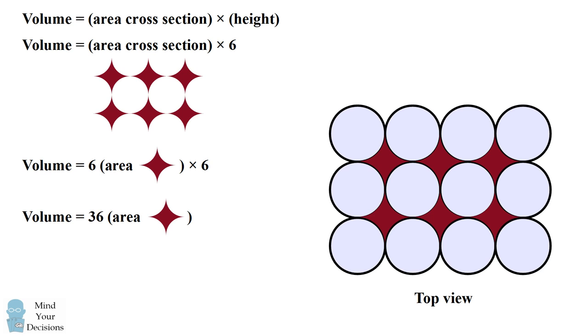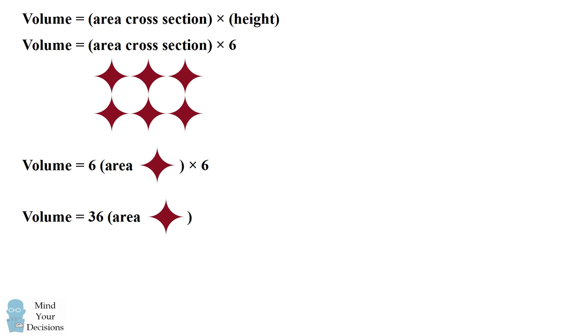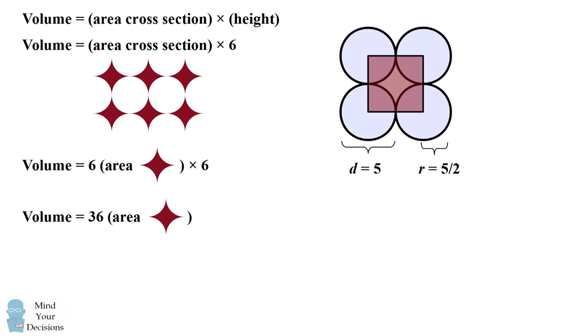What is that area? We start out by having 4 marshmallows. Each marshmallow has a diameter of 5, which means each circle has a radius of 5/2. We now draw a square that connects the center of these 4 circles.